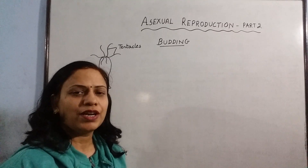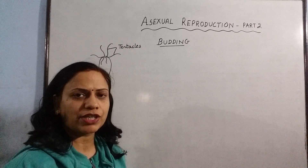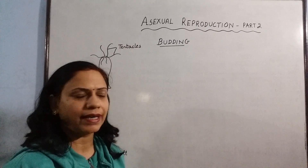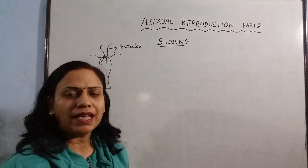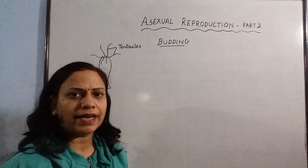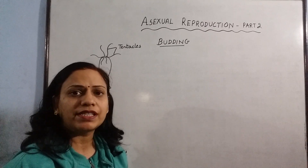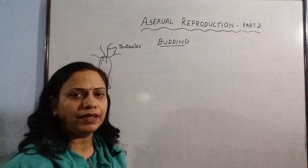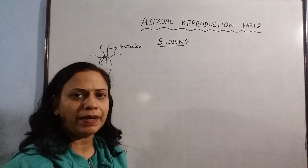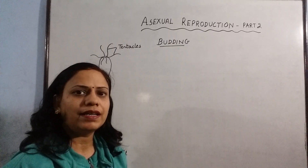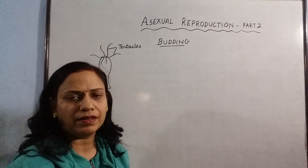Hello students, today we are going to study the second method of asexual reproduction, that is budding. Budding is a method in which an organism produces a small outgrowth which is known as a bud, and that bud later develops into a complete organism and then it detaches from the parent organism.